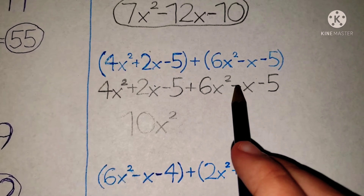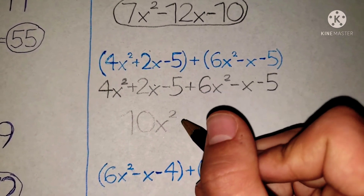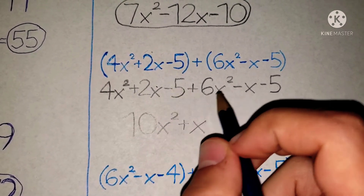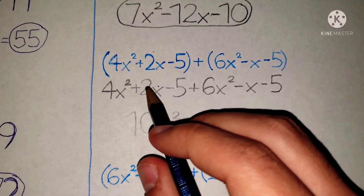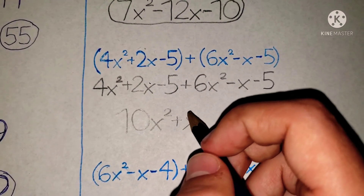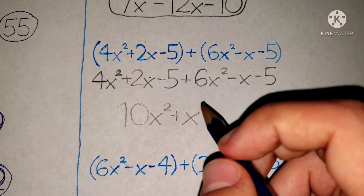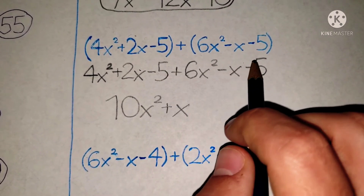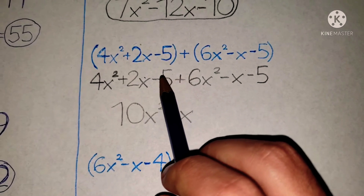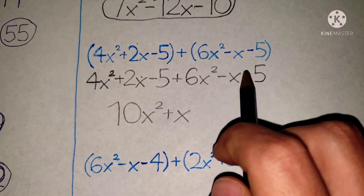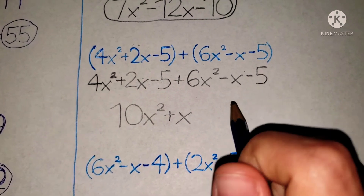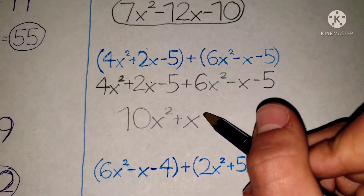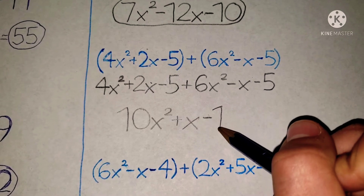And 2x minus x is going to be positive x — even though you have negative x and positive 2x, it's still going to be positive x, so keep that in mind. And negative 5 minus 5 — don't get confused here. Negative and negative, you still subtract it, so negative 5 and negative 5 is going to be negative 10. If it were negative 5 and positive 5 you'd cancel them, but here it's negative, so it's negative 10.